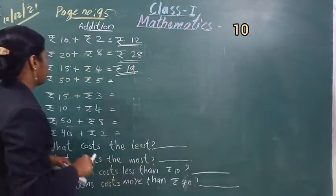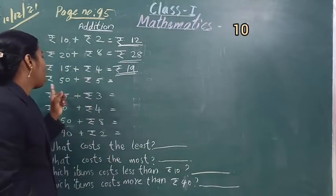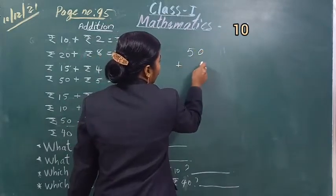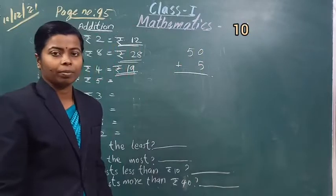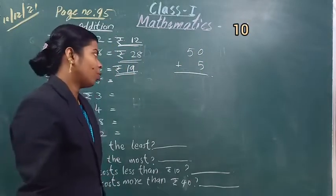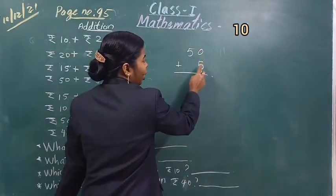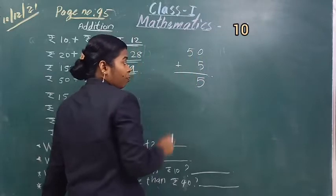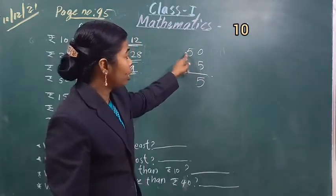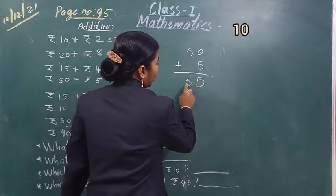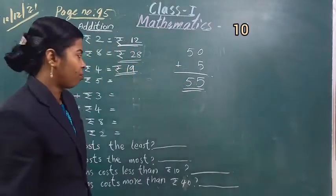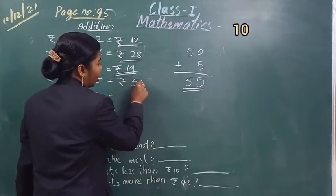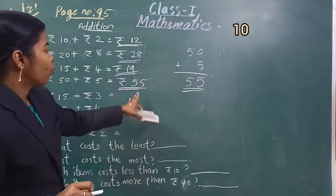Then next: 50 रुपीज plus 5 रुपीज. 50 plus 5. इदर देखो, सिर्फ 5 है, जोड़ने के लिए कुछ भी नहीं है — इसे ही निकाल के लिखना है. 50 plus 5 is 55. 55 रुपीज. Okay students.